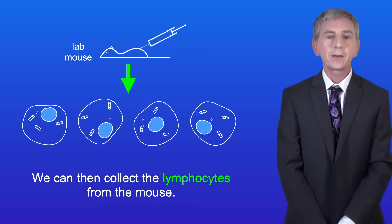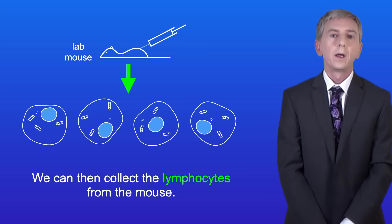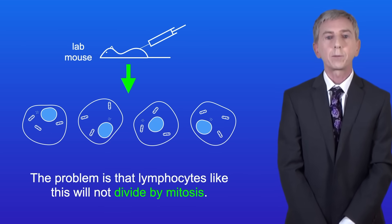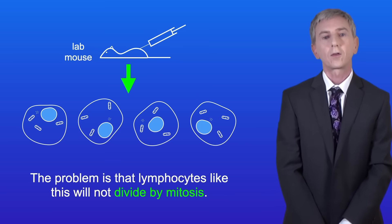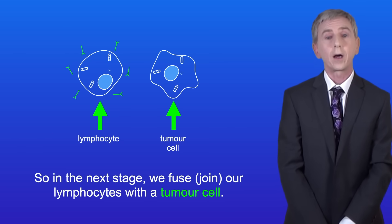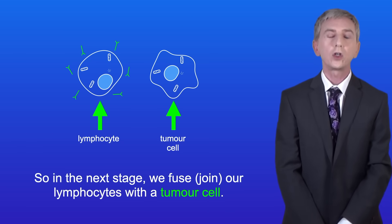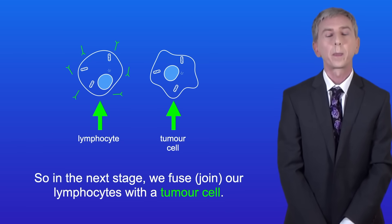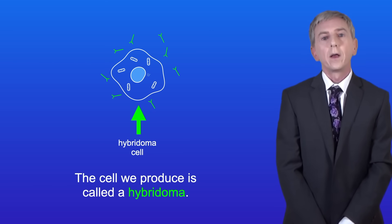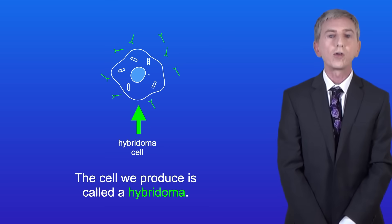We can then collect the lymphocytes from the mouse. Now the problem is that lymphocytes like this will not divide by mitosis. So in the next stage we fuse or join our lymphocytes with a tumour cell. Tumour cells are very good at dividing by mitosis. The cell we produce is called a hybridoma.